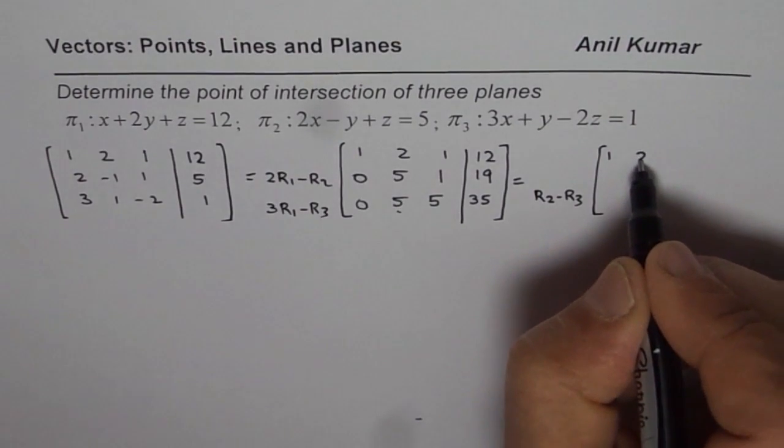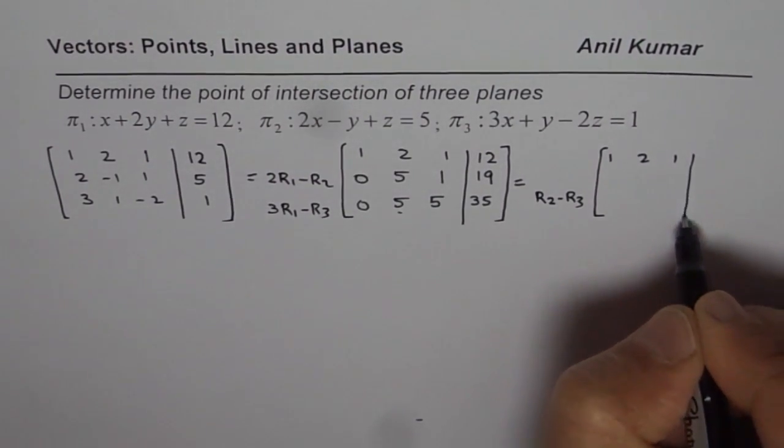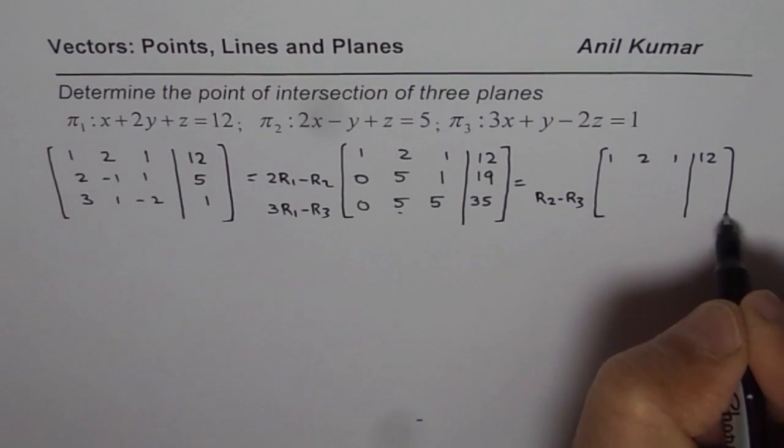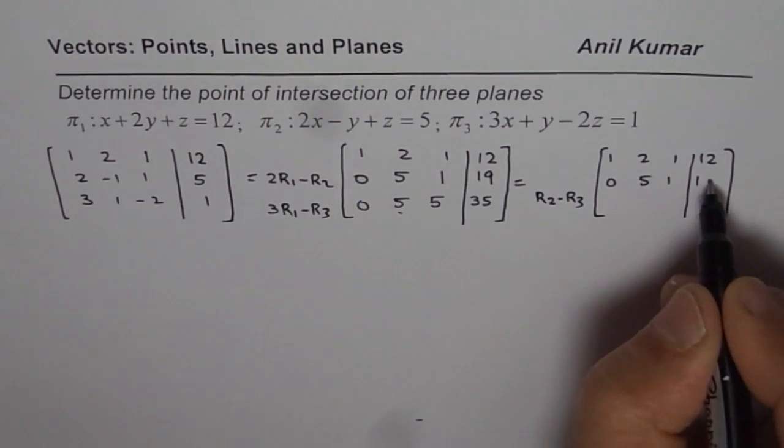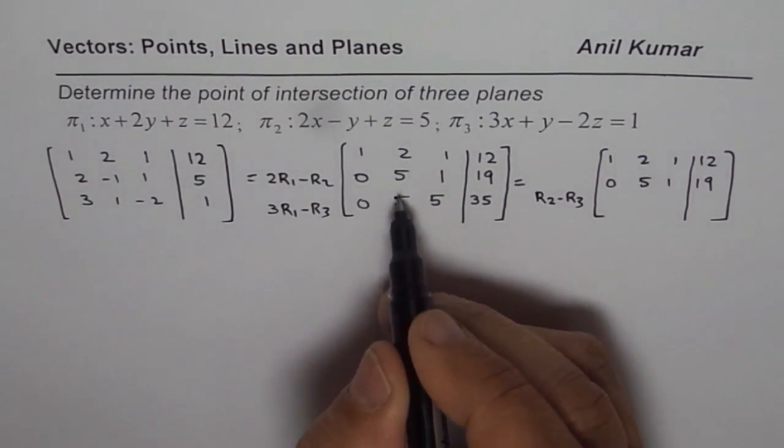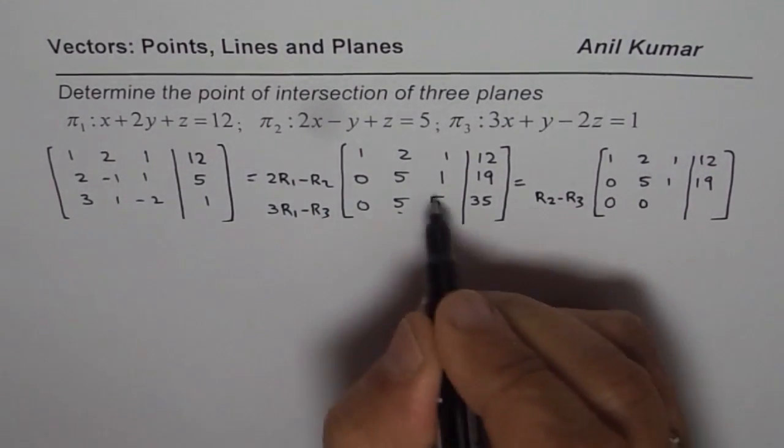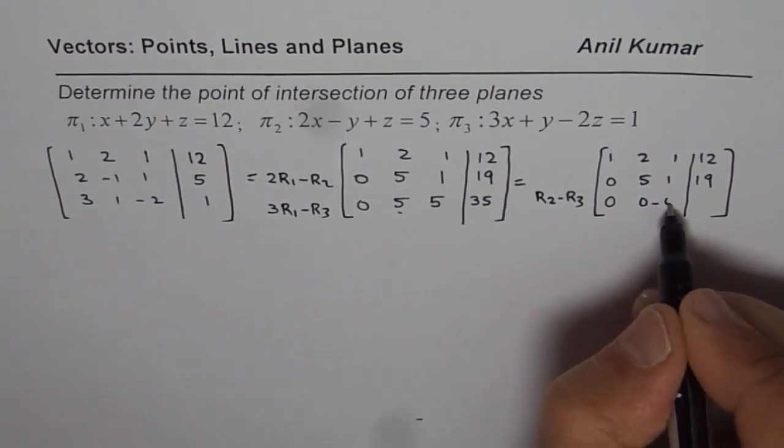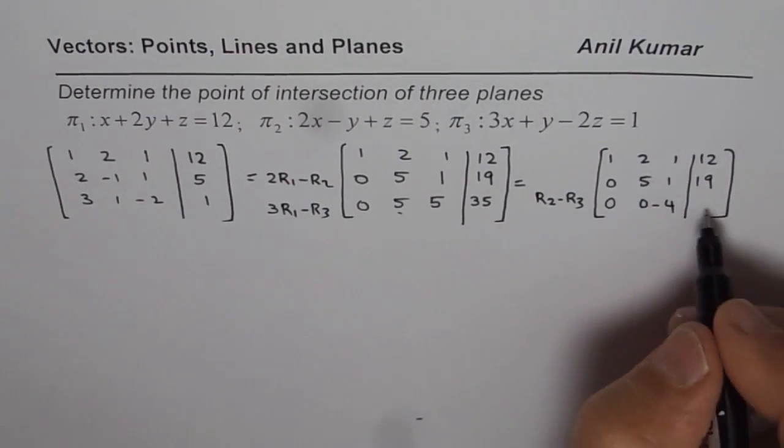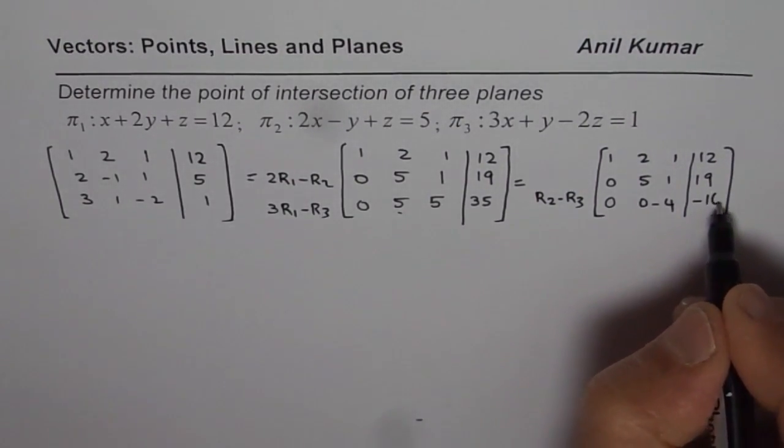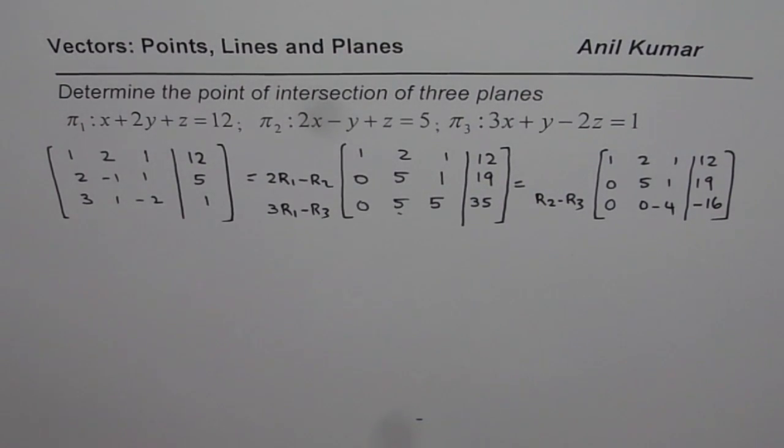So first row is 1, 2, 1, 12. Now this one also we will copy. So that is simple. Now we do R2 minus R3 to get 0, 0. 1 - 5 is -4, and 19 - 35 means -16. So that is the result.